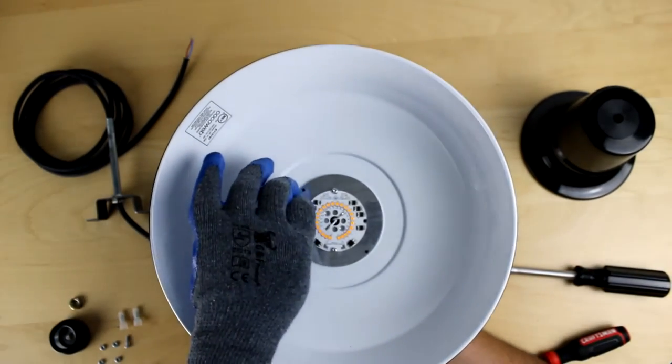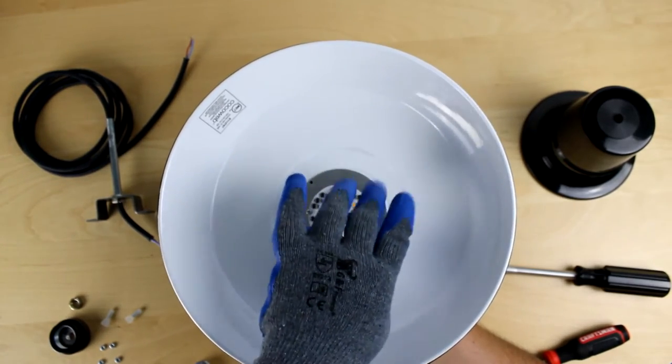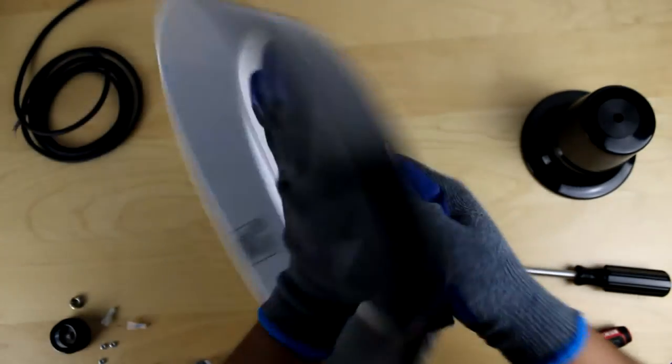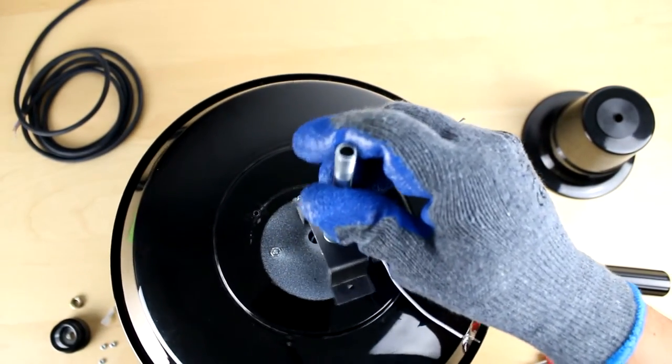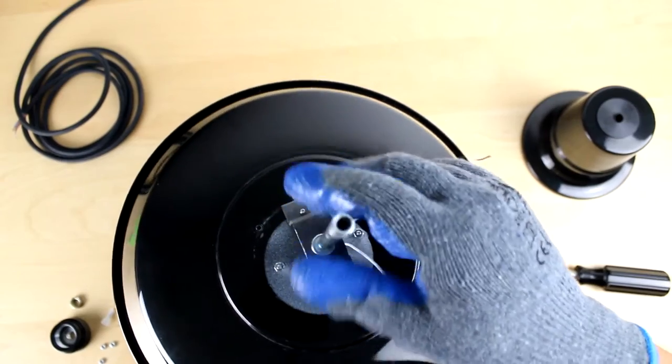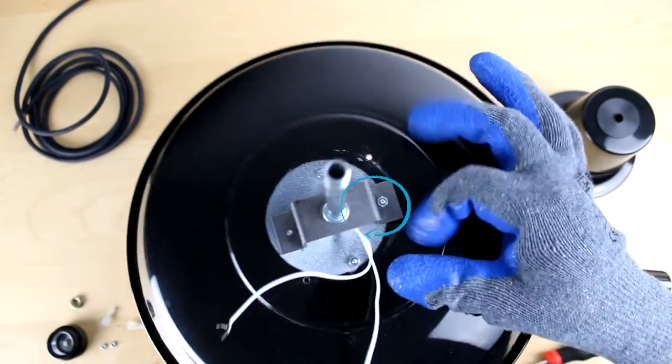Now flipping the shade back over to the bottom, we will have to put the two longer screws in the LED array holes, making sure the bracket can fit on top. Flipping the shade back over to the top, now we have to place the bracket on top of the open screws.